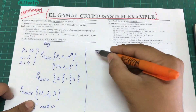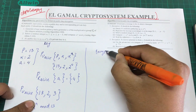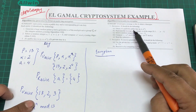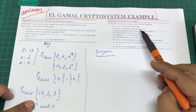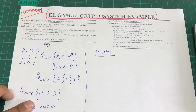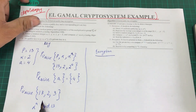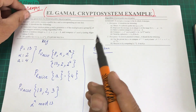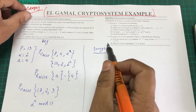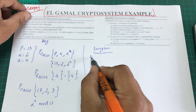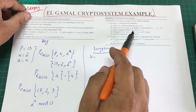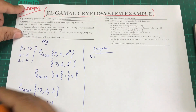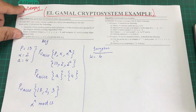Now for the encryption part. Bob obtains Alice's authentic public key and uses it to encrypt the message. Before encrypting, Bob selects a random integer k, where 1 ≤ k ≤ p − 2. Since p = 13, k is between 1 and 11. Let's select k = 6.